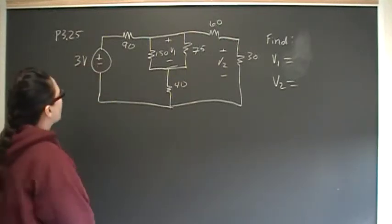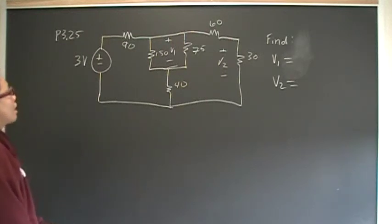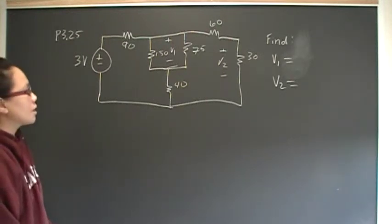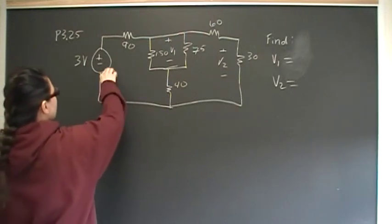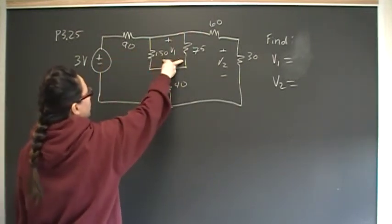Hey you guys, so I got a request for problem 25 from chapter 3. It's a 3 volt source in series with 90 ohms, and here we have two resistors.